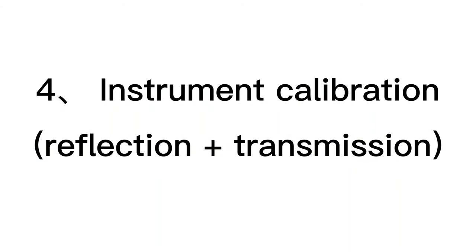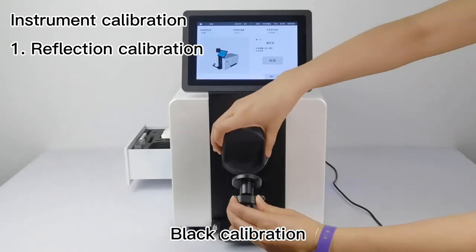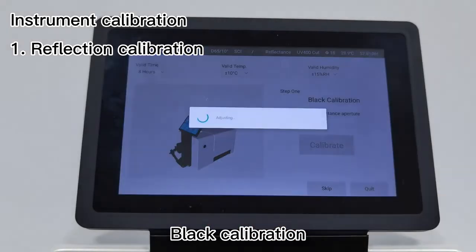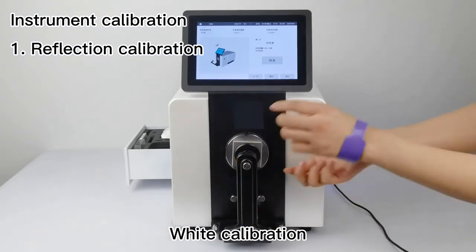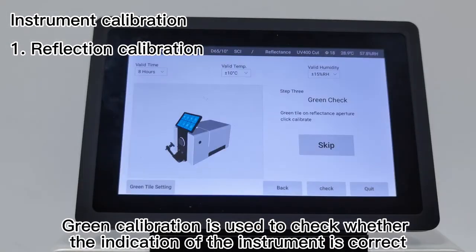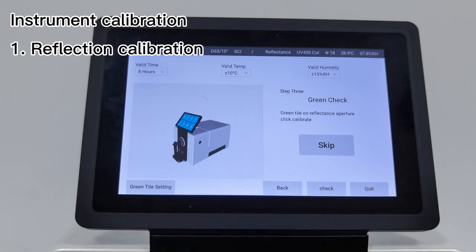Module 9 - Calibration: The instrument can be calibrated at any time for instrument calibration - black calibration, white calibration, and green calibration. Green calibration is used to check whether the indication of the instrument is correct. You can skip the green calibration.